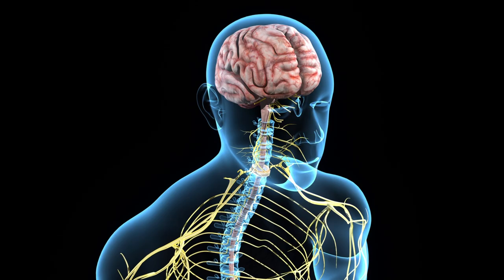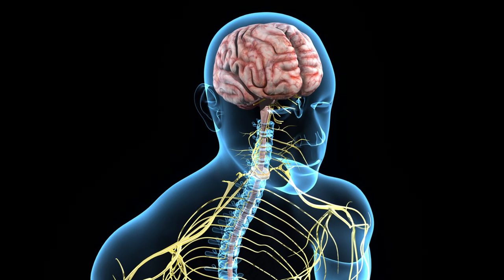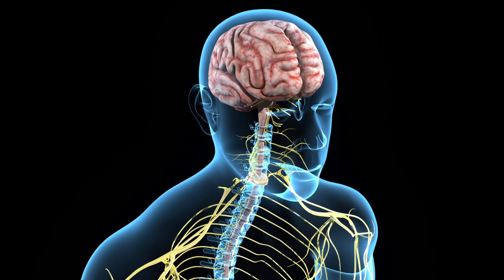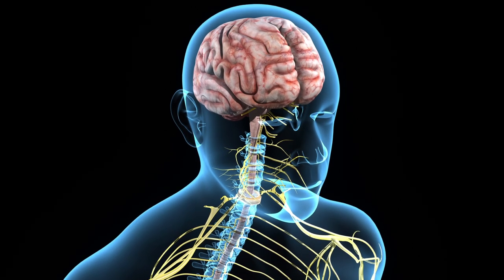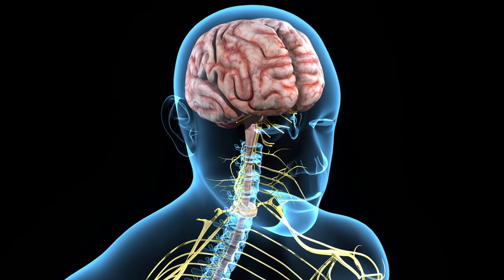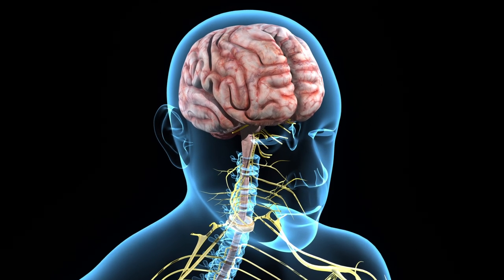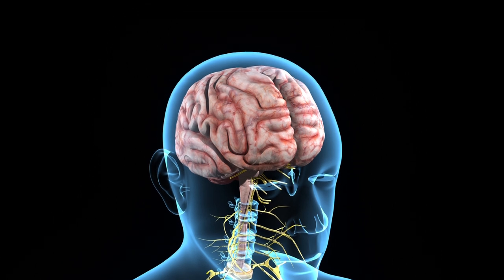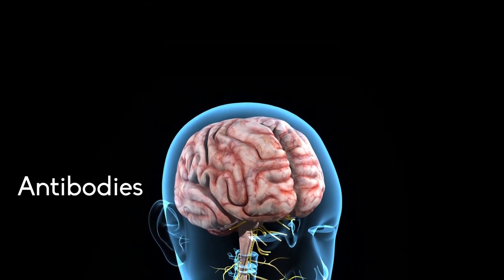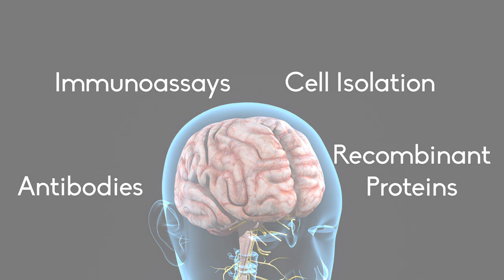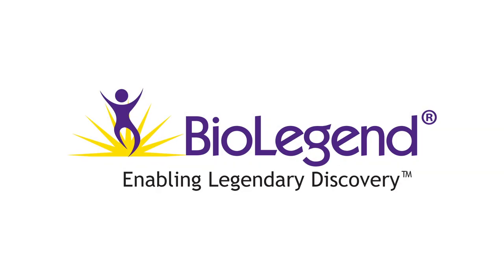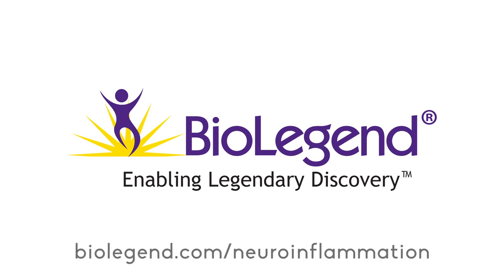The vast breadth of BioLegend's immunology reagents and gold standard neuroscience antibody products provide a wide range of solutions to identify and study immune-related cell types and to interrogate inflammatory pathways in the CNS. BioLegend's comprehensive portfolio includes antibodies, immunoassay and cell isolation solutions, and recombinant proteins. Learn more about neuroinflammation and products to study pathways in the CNS at BioLegend.com/NeuroInflammation.